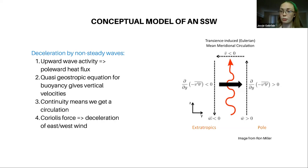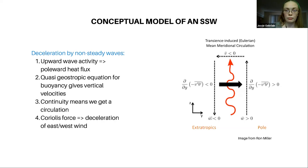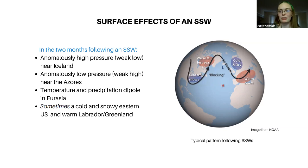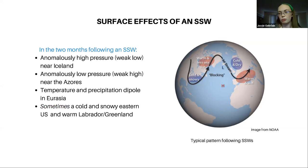Now we know something about how a sudden stratospheric warming works. How do they matter for us? After that wind reversal happens, for about two weeks we get cold and dry Northern Europe, warm and wet Southern Europe, some different pressures in the Northern Atlantic, and sometimes effects in North America. That 2018 SSW was followed by four nor'easters in the span of about six weeks, largely attributable to that event. Understanding this can help us make predictions ahead of time for what a winter will be like, which is useful for various government services and industries.